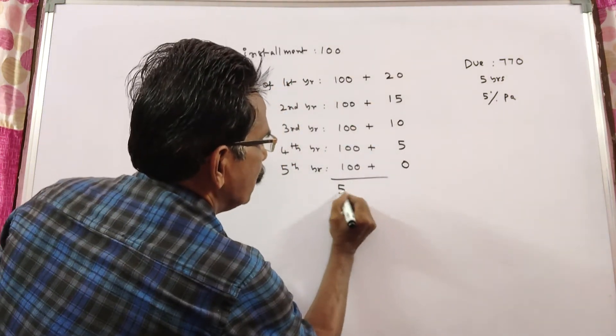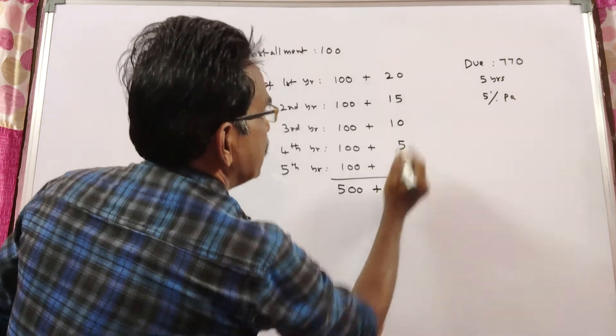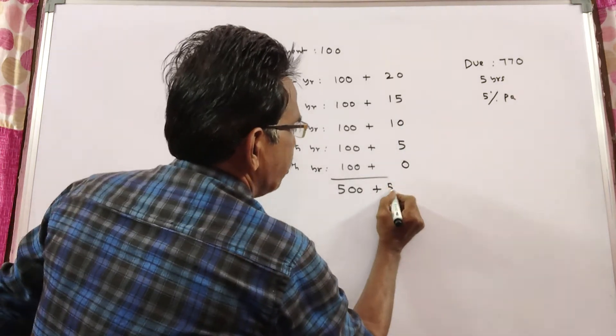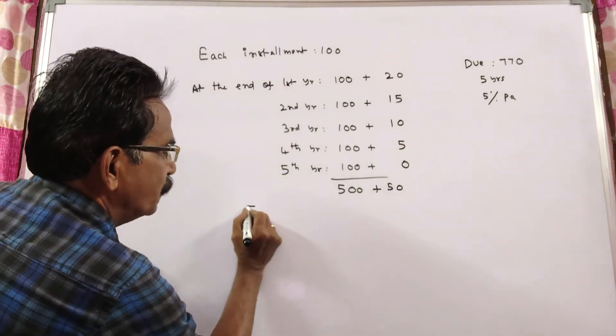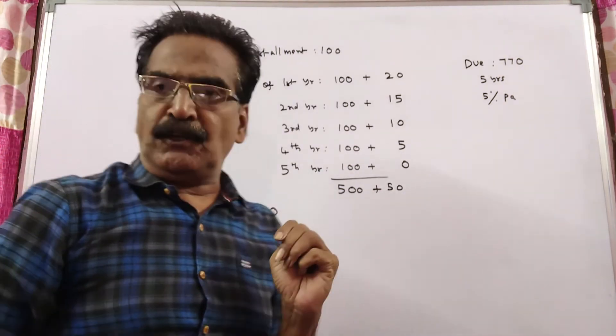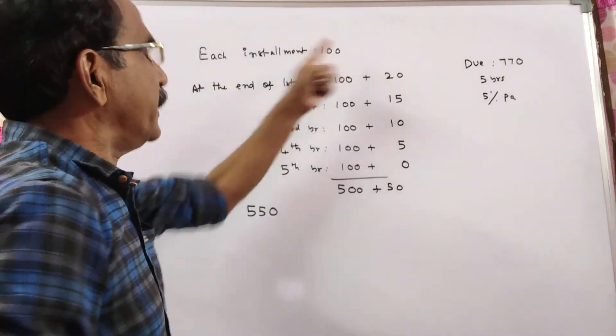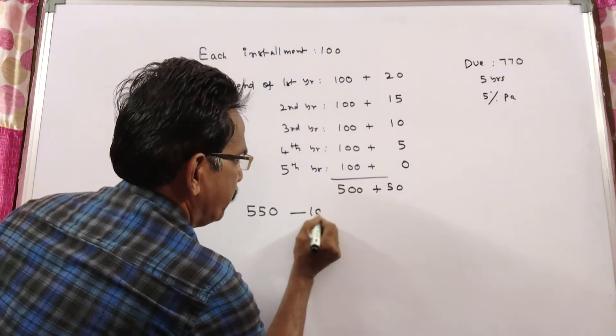Now the total due is 500 plus 35, 45, 50. If the total due is 550 rupees, your installment must be 100.